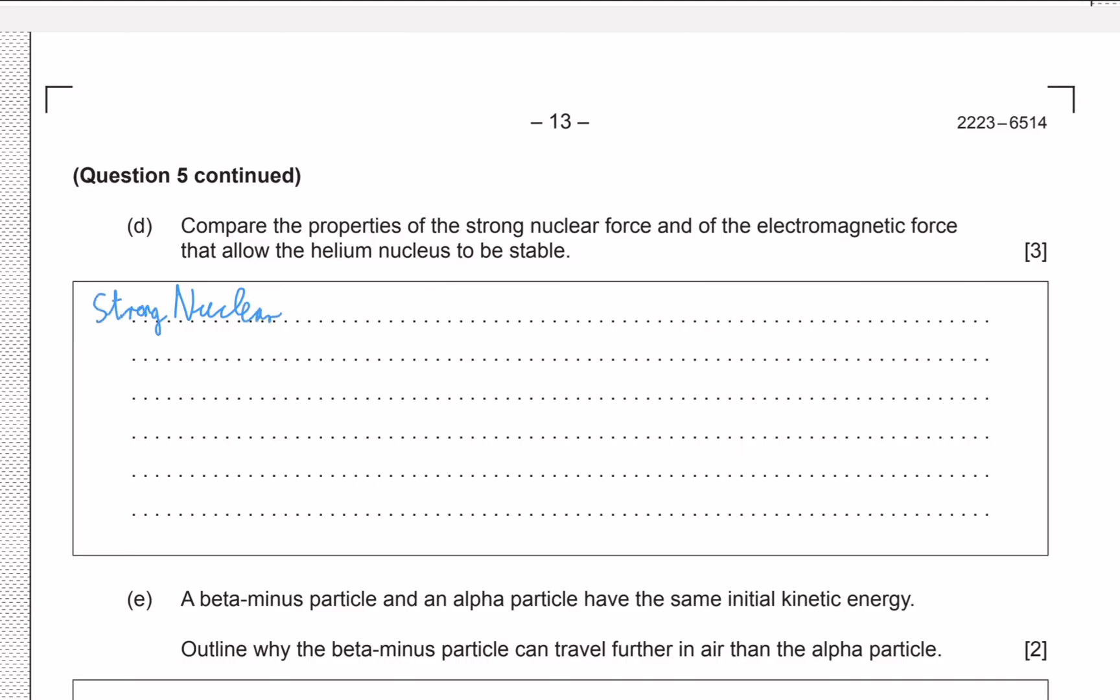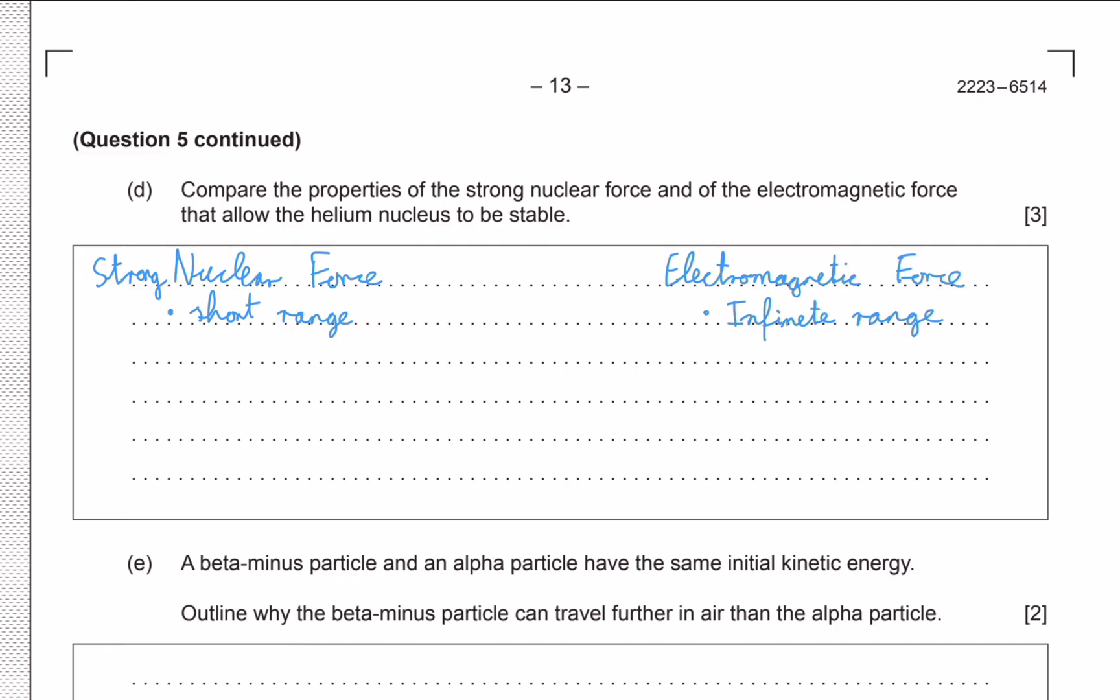So first of all, the strong nuclear force in one column, let's write the electromagnetic in another column. Well, let's first think about the ranges. We know that the electromagnetic force is an infinite range. The formula in the data booklet is something over r squared, so we can very easily plug in infinity for r. For the strong nuclear force, this is only short range. These are just the properties you kind of have to remember for these forces. A question like this can come up and there isn't too much to think about here - it's just whether you know it or not.